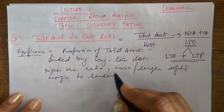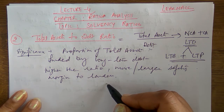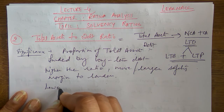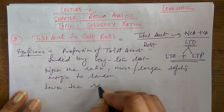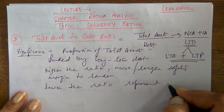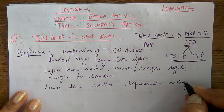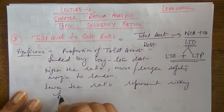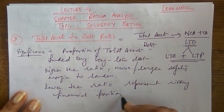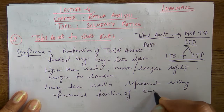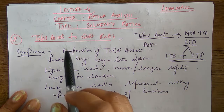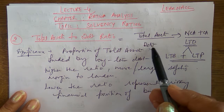The higher the ratio, the greater the safety for lenders — debt will be more secure. A lower ratio represents a risky financial position of the business. This ratio can be expressed as a pure ratio, for example: two times, three times, four times.